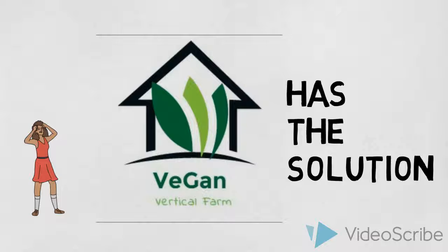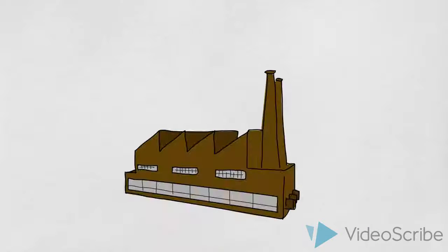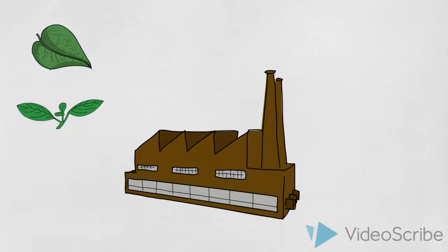Vegan has the solution. By introducing a vertical farm in a vacant building, we will locally produce fresh vegetables and fruits for the people of Reykjavik and its surroundings. How does it work?